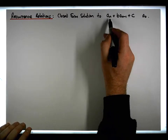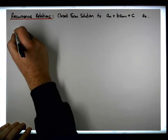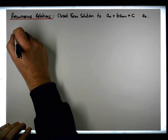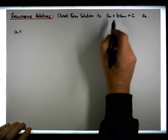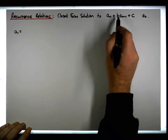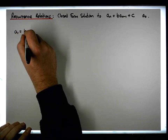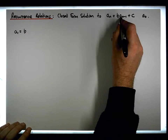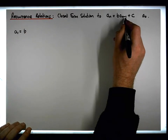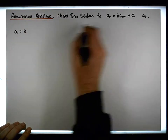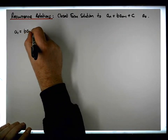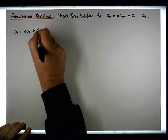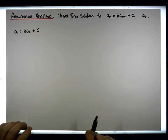Starting with a₁: a₁ must equal b times a₀ plus the constant c. So a₁ is pretty straightforward.